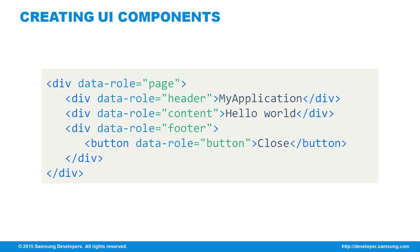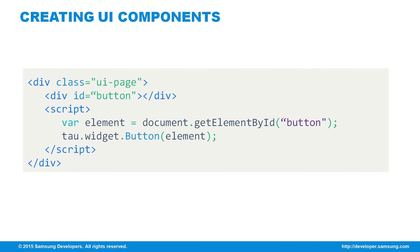Here is the code for creating a similar page but on mobile. Instead of using class, a data-role attribute is used, and the keywords are page, header, content, and footer. Aside from creating UI components by HTML, we can also use HTML plus JavaScript to create UI dynamically. The div with the ID button is targeted and used as an argument to the TAO widget button function. TAO widget is the components constructor from the TAO namespace.